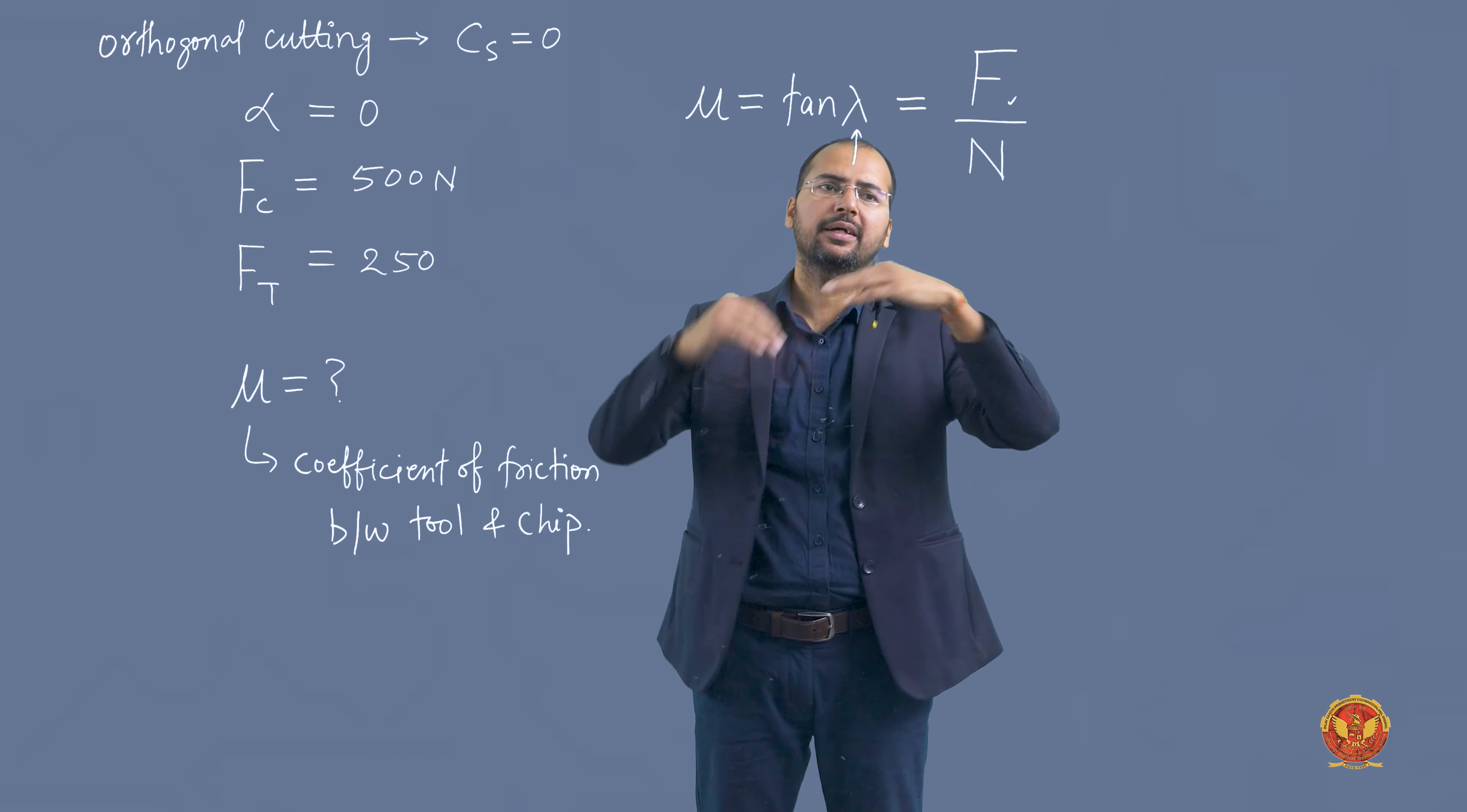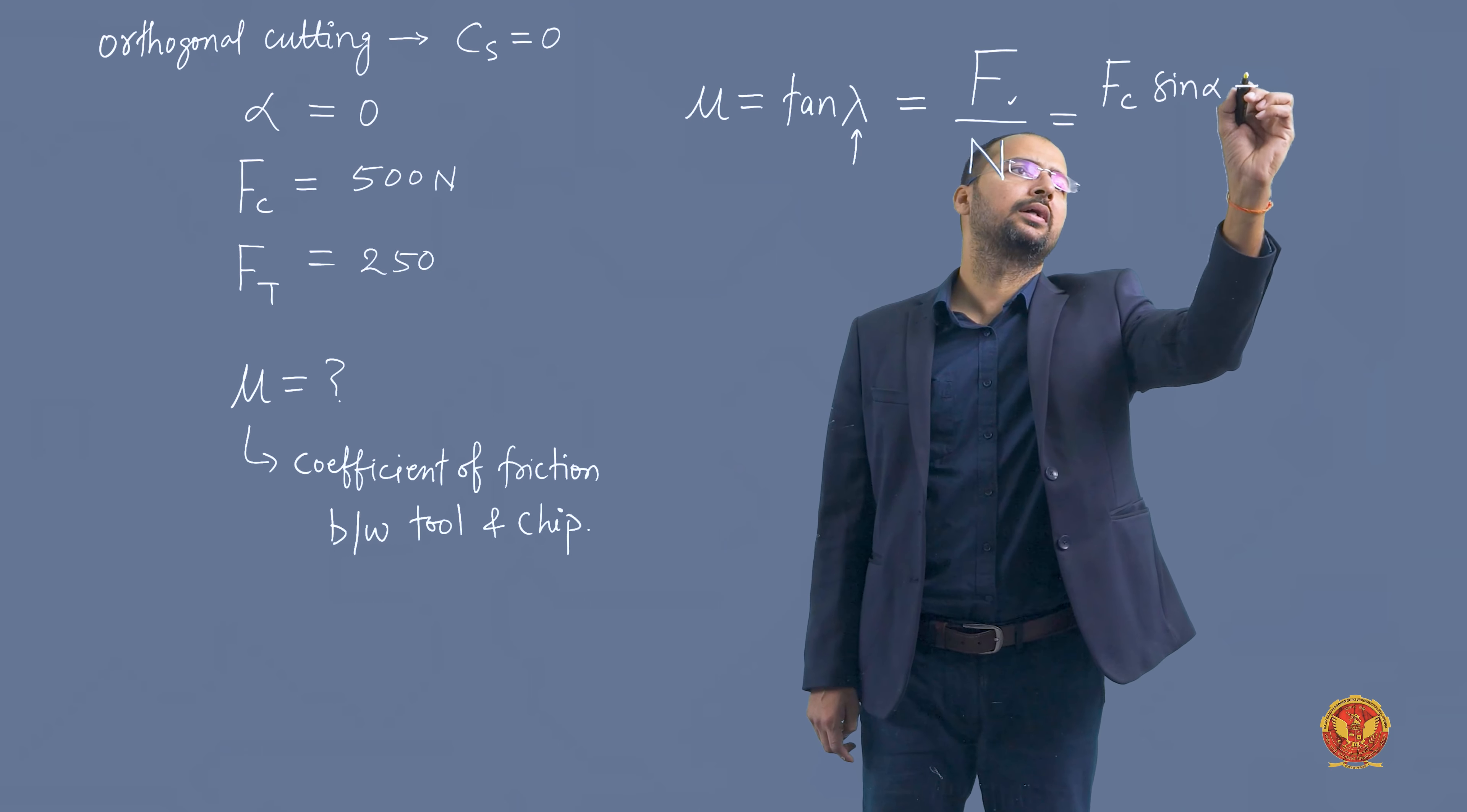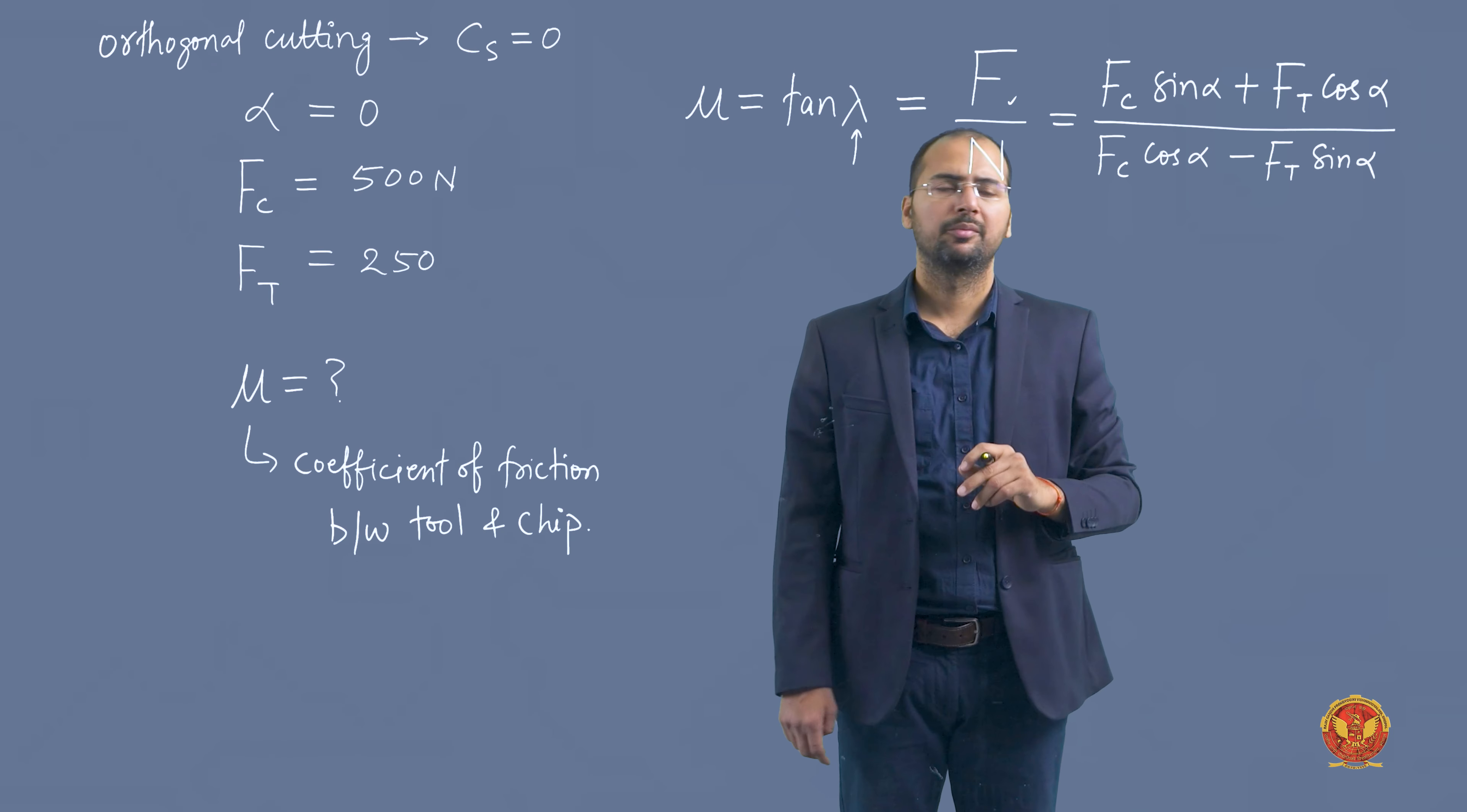So if we know the relation between tool and chip forces, we can find the coefficient of friction. The formula for f is Fc sin alpha plus Ft cos alpha. The formula for n is Fc cos alpha minus Ft sin alpha. These formulas come from merchant circle diagram.